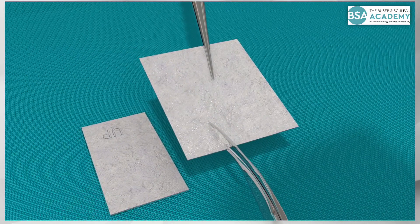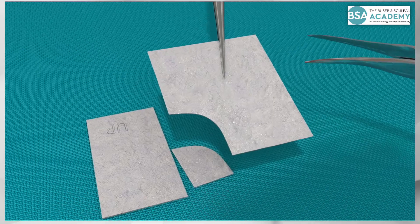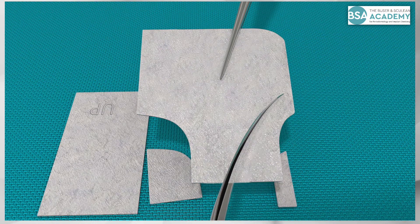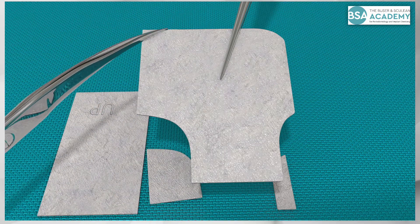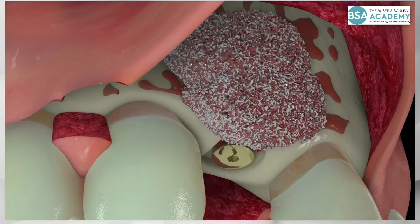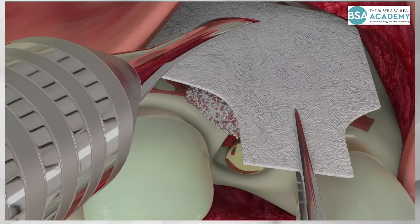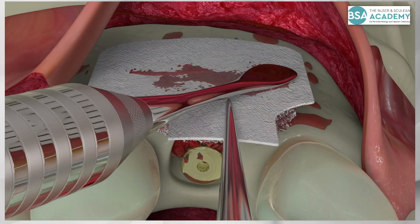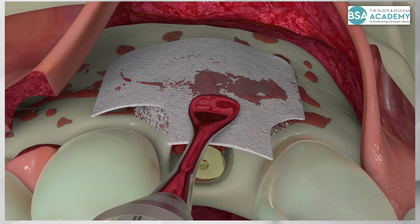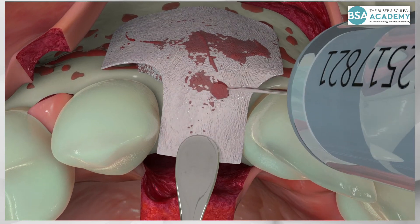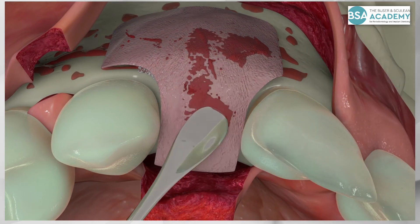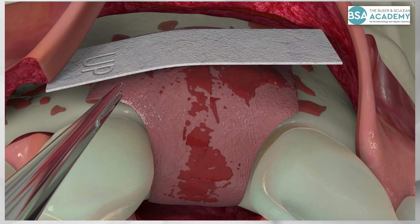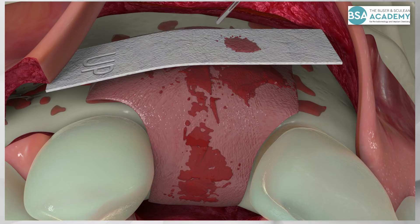A critical step for a GBR procedure is the utilization of a barrier membrane. A collagen membrane is cut into two pieces — a larger and a smaller one — and trimmed to shape. Collagen membranes offer several advantages: they are easy to apply when soaked with blood, and when moistened with bone-conditioned medium, the membrane becomes soft and adhesive, easily adapted to the local bone anatomy. The second membrane strip improves the membrane thickness in the defect area and improves the stability of the membrane.